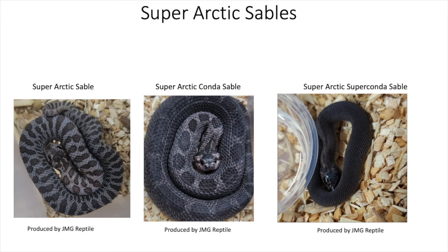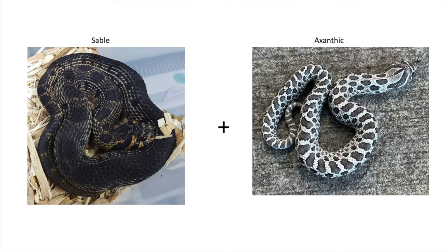Next we have the super arctic sable, the super arctic conda sable, and the super arctic super conda sable — a very unique snake. Before I saw it in person I wasn't sure if I'd be able to distinguish a regular super arctic from a super arctic sable, but the difference is clear when you see it in person. Some of the super arctic sables actually have a bluish hue to them, which is pretty cool.